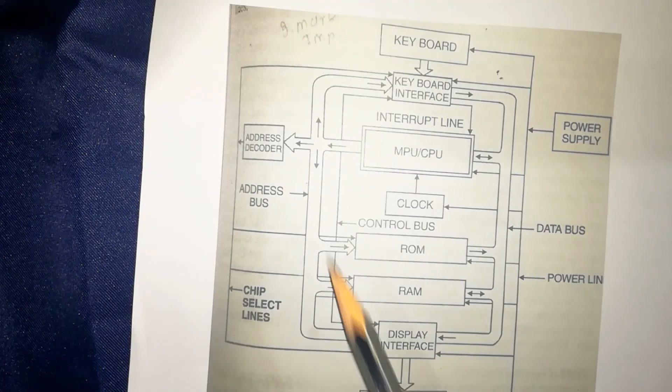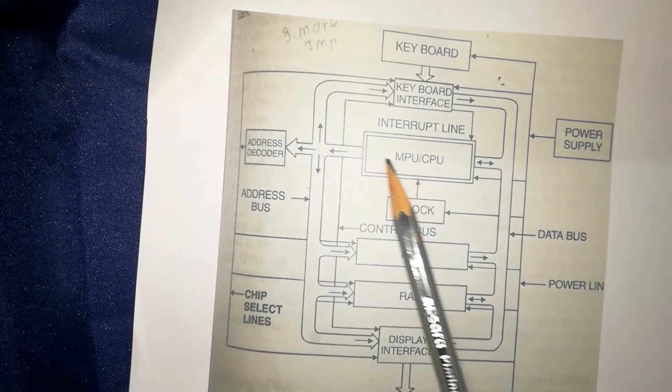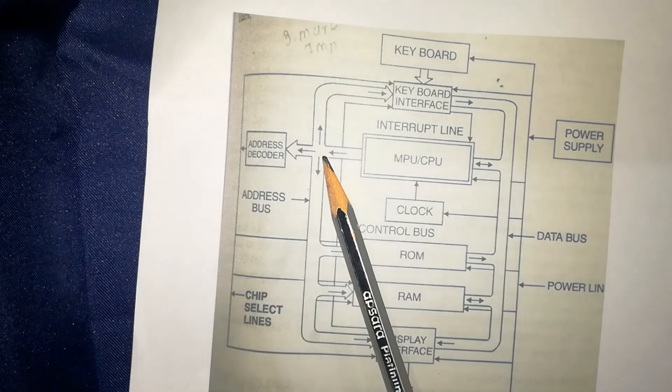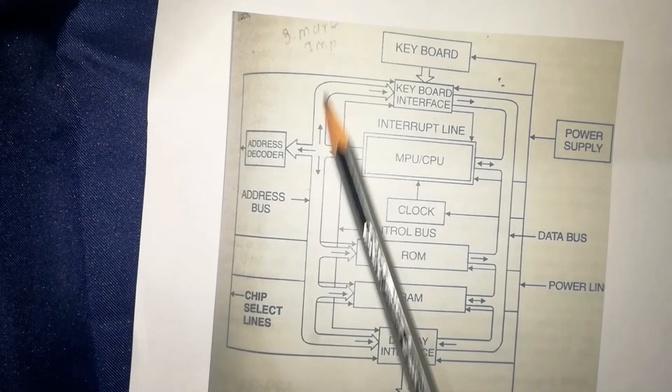Next is address decoder. It collects the data from the MPU and selects the proper device to send this data.